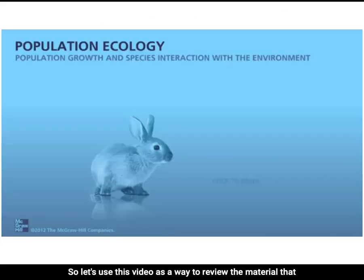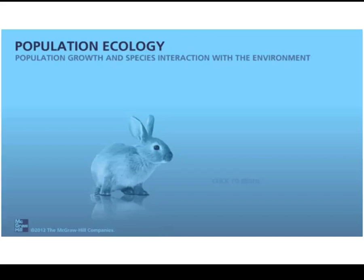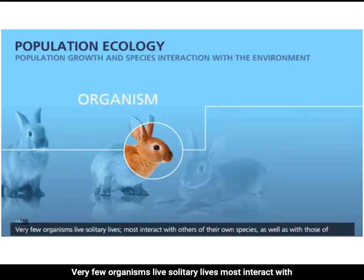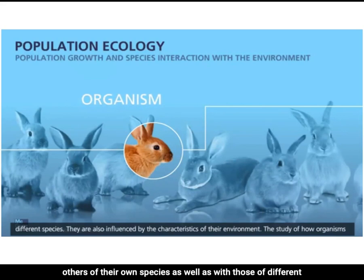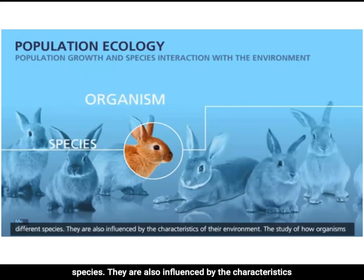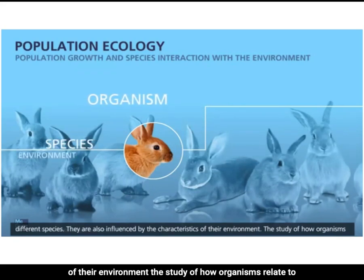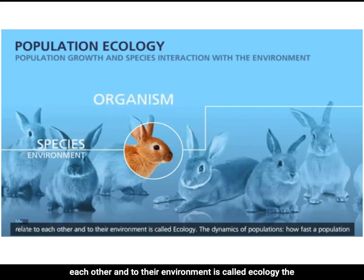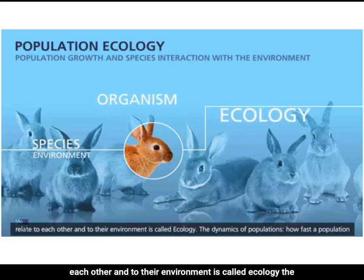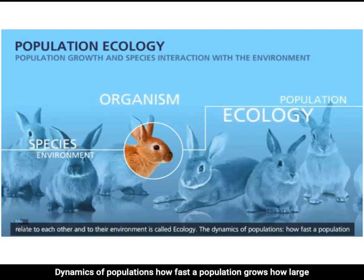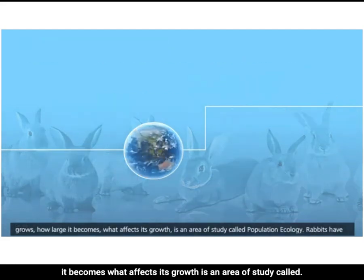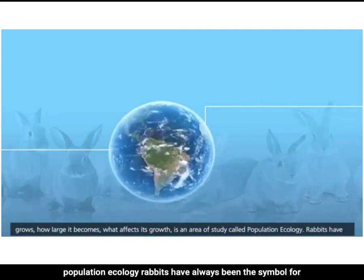Let's use this video as a way to review the material covered in this lecture. Very few organisms live solitary lives — most interact with others of their own species as well as those of different species, and are also influenced by the characteristics of their environment. The study of how organisms relate to each other and to their environment is called ecology. The dynamics of populations — how fast a population grows, how large it becomes, what affects its growth — is an area of study called population ecology.